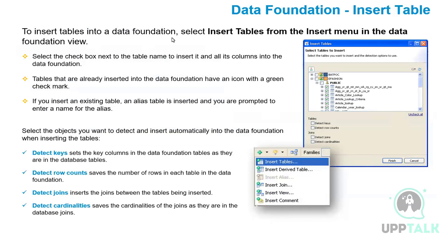To insert tables in the data foundation, first we will create a data foundation, then we'll select the insert table option. The plus symbol is for insert. If we click on the arrow we will see options: insert tables, insert derived table, insert join, insert view, or insert comment. If we select insert tables, we get the option to select tables. All tables in the connected data source will appear, and we can check the required ones and click finish to insert them.